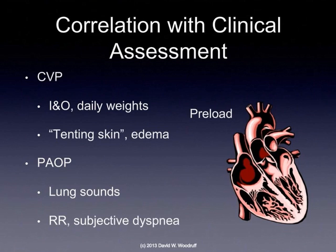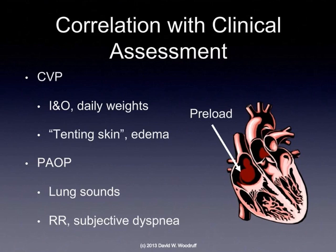How these hemodynamic parameters correlate with our clinical assessment is as follows. Our preload is going to be measured by our CVP — our central venous pressure — and our pulmonary artery occlusive pressure. The pulmonary artery occlusive pressure reflects the pressure on the left side of the heart, and the CVP is the preload on the right side of the heart. We can also assess the preload of the right side by looking at the patient's intake and output, their daily weights, tenting of skin showing dehydration, or edema showing that the patient may have fluid overload.